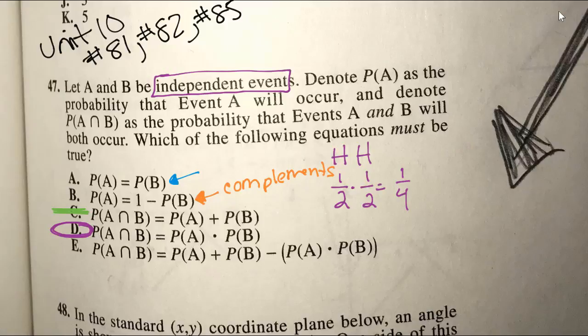And finally, option E is when we find the union of A and B, or the probability of A or B happening. This is the formula that we will use.